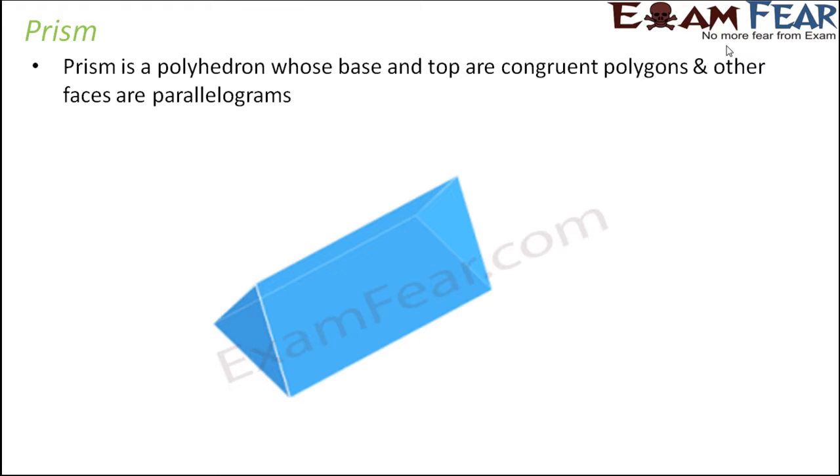So the prism has two congruent polygons which form the base at the top. If this is the base of the prism, the base is a triangle. So obviously the top face of the prism would also be a triangle. In fact, both of these triangles would be congruent to each other, so exactly identical triangles.